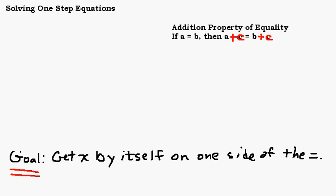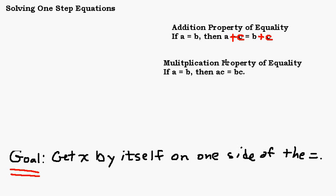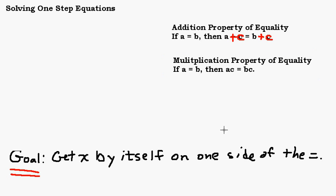This property is a lot like the addition property of equality, except it's called the multiplication property of equality. It says: if A equals B, then A times C equals B times C. If you have two sides of an equal sign and the left-hand side equals the right-hand side, you can multiply both sides by whatever number you want — in this case C — and you will still have two things that are equal to each other.